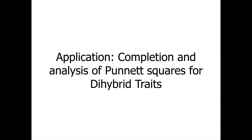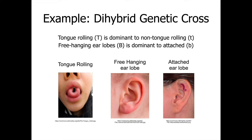Our application is the completion and analysis of Punnett squares for dihybrid traits. The example we're going to move through here is a dihybrid genetic cross involving two traits. One of them is going to be tongue rolling, whereby the ability to do so is dominant to not being able to tongue roll. We're also going to look at earlobes — a free hanging earlobe is dominant to an attached earlobe, as shown in the images.